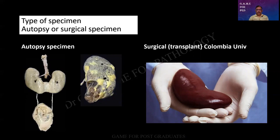The type of specimen. You may be given a gross specimen for description and discussion or it can be an assembled autopsy. In this case, obviously, I find that it has been removed totally. Therefore, the patient is no longer alive. So also in this case, the situation appears to be very bad. Patchy areas of purulent exudate. Therefore, it is an autopsy specimen.